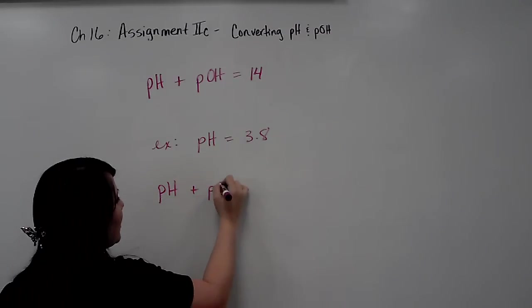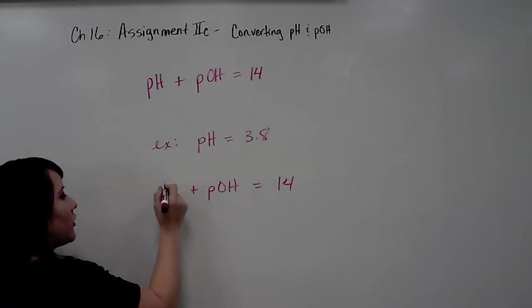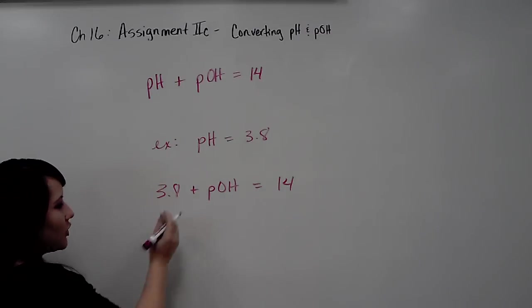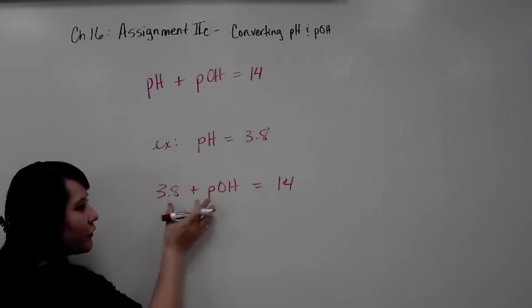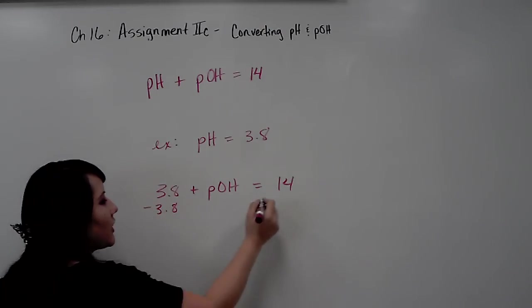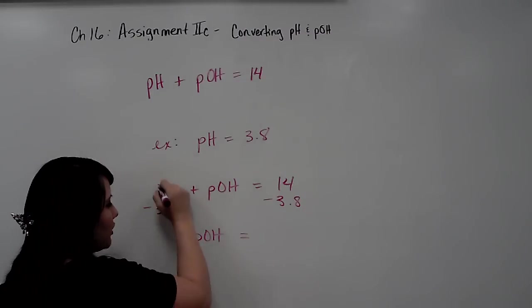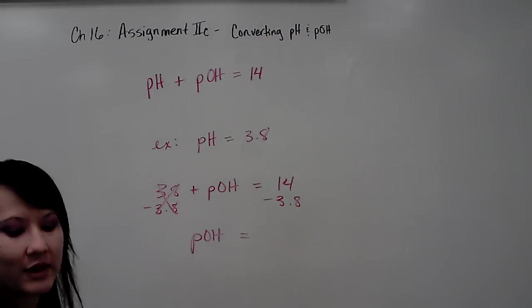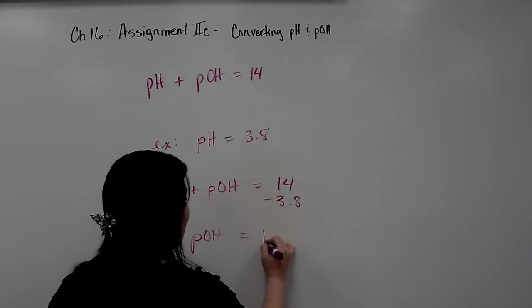pH plus pOH equals 14. I'll simply put 3.8 in place of my pH, and in case you don't remember, in order to solve for such an equation, you'd want to subtract 3.8 from both sides. So the pOH would be equal to 14 minus 3.8. 14 minus 3.8 is 10.2.